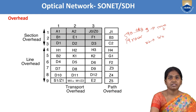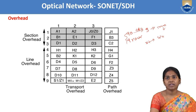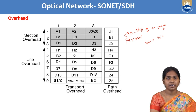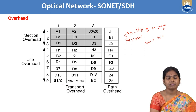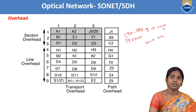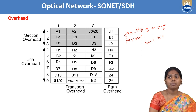The frame starts with bytes A1 and A2. Section overhead bytes include: A1, A2 (framing), J0 (section trace), B1 (parity), E1, F1, D1, D2, D3, and R. Line overhead bytes include: H1, H2, K1, K2, D4–D12, S1, Z1, M0 or M1/Z2, and E2. Path overhead bytes include: J1, B3, C2, H4, G1, F2, Z3, Z4, and Z5.